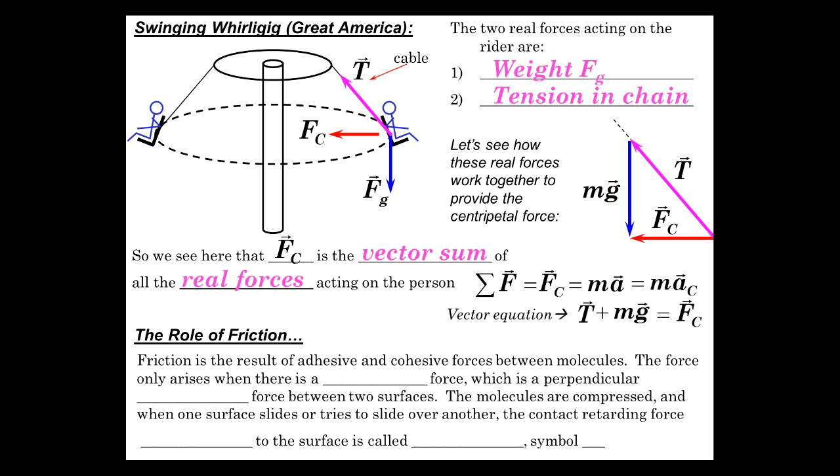What role does friction play? This is just review. It's the result of the adhesive and cohesive forces between molecules and atoms. It arises when there's a normal force, two surfaces pressing together. That's a contact force between two surfaces. And when one surface slides over the other, there's a retarding contact force that's parallel to the surface and usually opposite the direction of motion. And it's called friction symbol F. So this is something that you already know. And now let's move on to some additional examples.